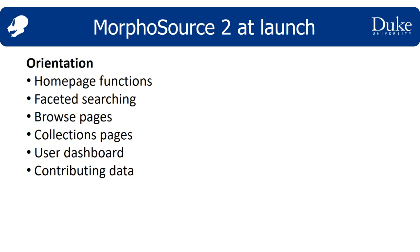Today, I want to cover basic homepage navigation, faceted searching, browsing, what collection pages are, what's in the user dashboard, and how to contribute data. When I say how to contribute data, I really just mean where to find the buttons to start submission workflows. We will supply other tutorials specifically about the submission workflow in the near future.